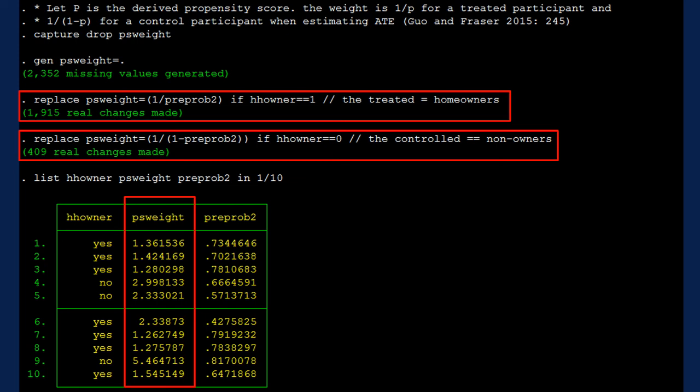I calculated weights following the formula. For homeowners, I asked Stata to calculate 1 over propensity score for homeowners and 1 over 1 minus p if the respondent is a non-owner.